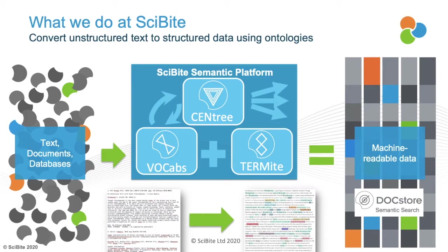What we do is we use ontologies and vocabularies that we have both developed ourselves, but also that our customers have developed. We use this to quickly identify and extract the right scientific terminology from unstructured text, documents, databases, and we transform that into a rich semantically annotated machine-readable data set. We do this through our vocabularies and Termite tooling. This will give you a machine-readable output, such as JSON or various other formats, that you can then use for big data analytics, integration, or enterprise-wide search.